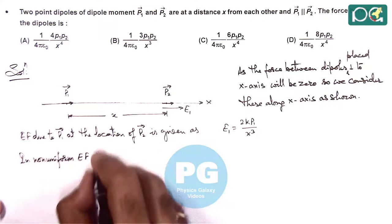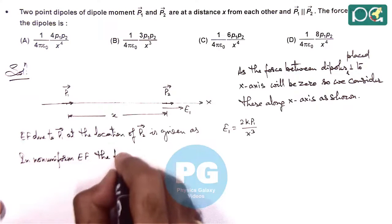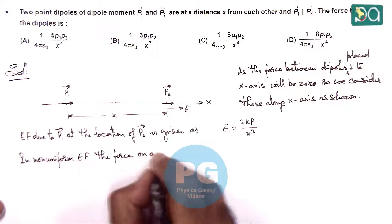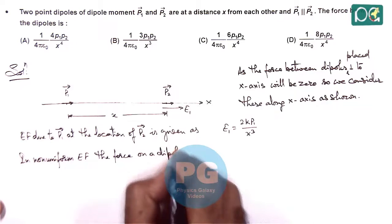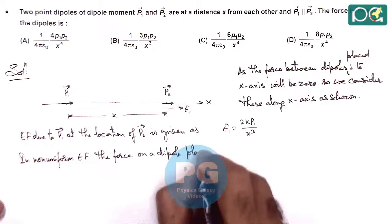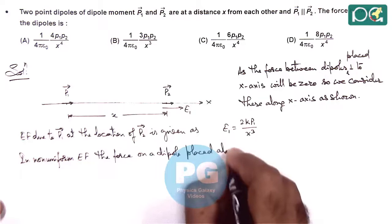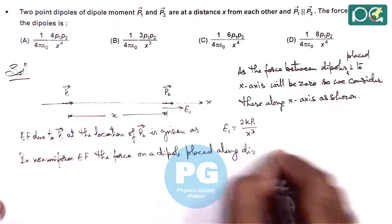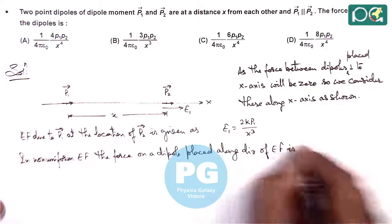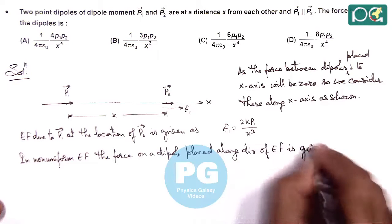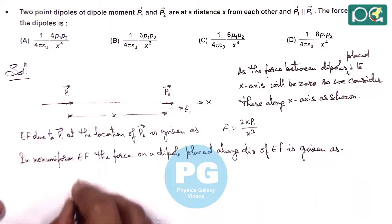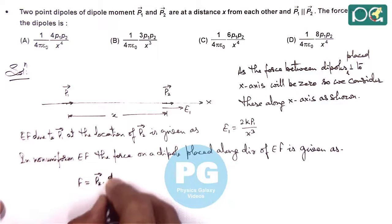The force on a dipole placed along direction of electric field is given as, this we have discussed in theory, the force is given as p2 dot dE1 by dx.